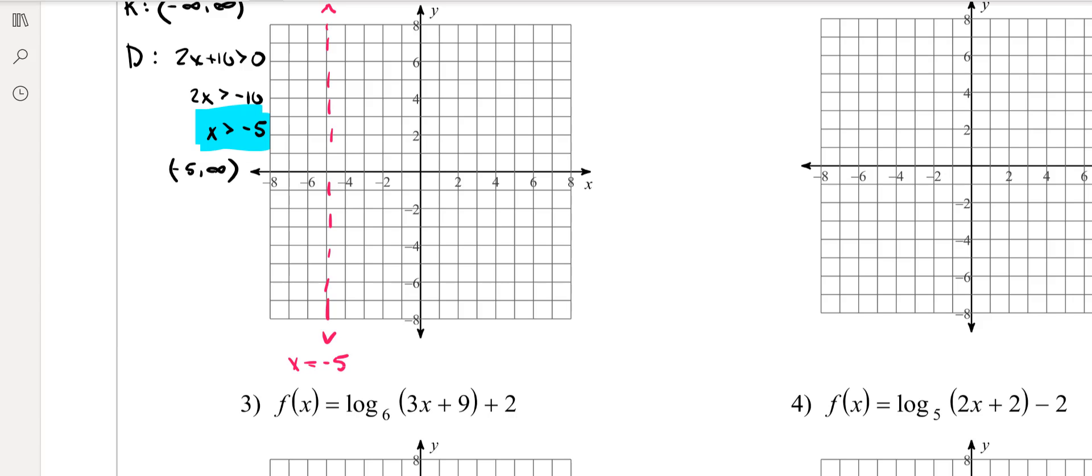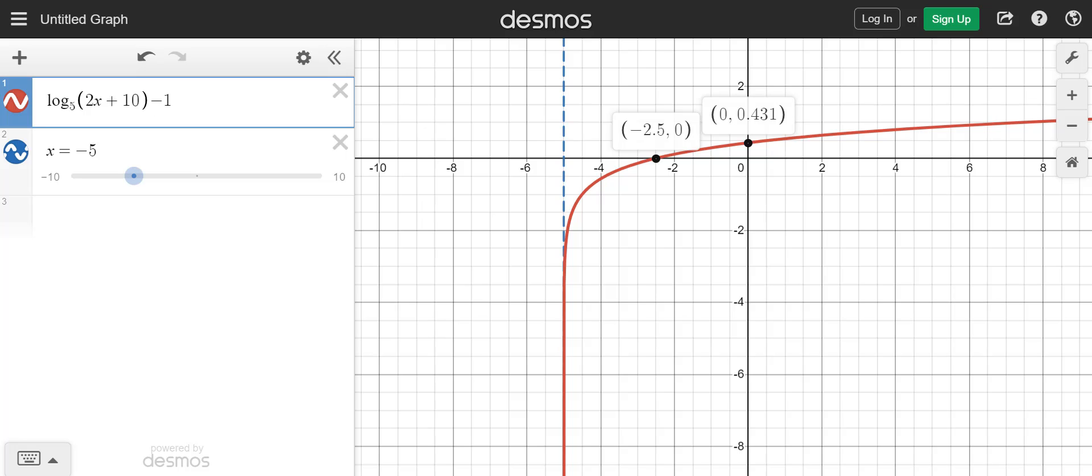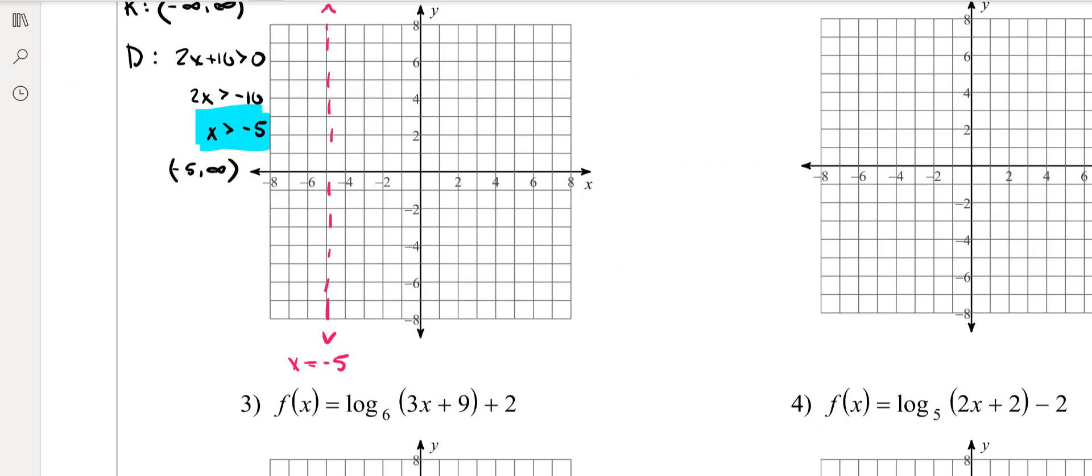And then the other two things we're going to look at are going to be the x-intercept, which is at negative 2.5. So that's pretty nice, because that's there. So you go over to negative 2.5, wherever that is, and it's an approximation. So you're going to put a dot right there.